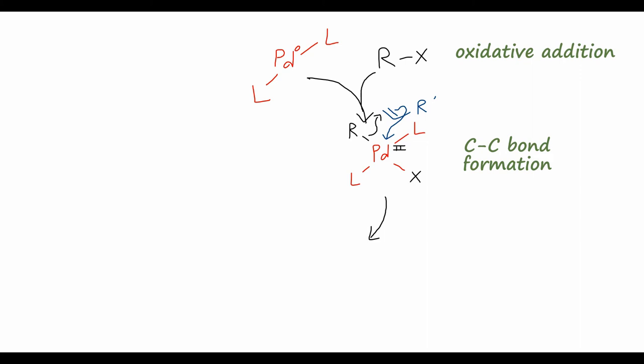So what we end up with is this intermediate, where we have the R and R' groups bonded to these two carbons, and we still have this palladium-2 with the two ligands and the halide on this carbon. Next, we undergo a beta-hydride elimination. So what's going to happen is this palladium-carbon bond here will swing up to pluck off the hydrogen on the adjacent carbon, and this CH bond will come down to reform the pi bond between these two R and R' groups.